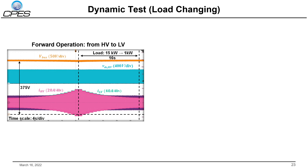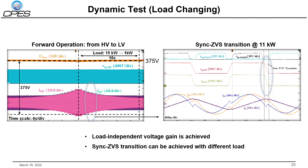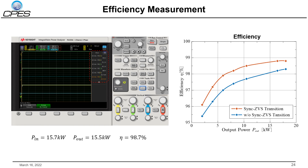To verify the load-independent voltage gain, a load-changing test is conducted. When the load changes from 15 kW to 1 kW, the output voltage remains nearly constant at 355 volts. Experimental results at 11 kW confirm that since both sides VDS start and end at the same time, ZVS transition is achieved across different loads. The efficiency measured by power analyzer shows a peak efficiency of 98.8% at 18 kW, an increase of 0.6% compared to the no-ZVS transition case.